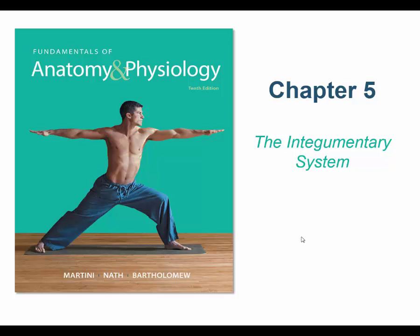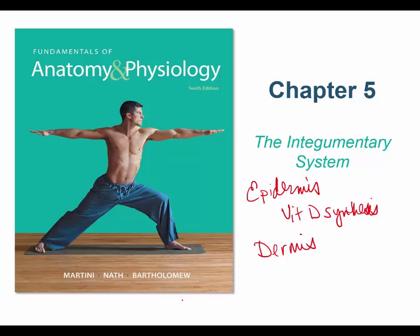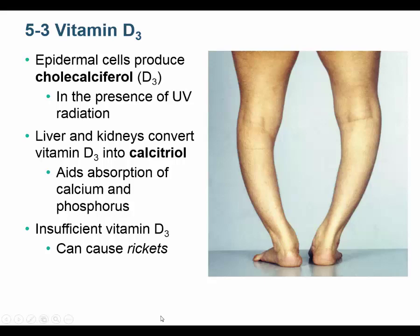Welcome back to chapter five, integumentary system, sections 5-3 through 5-5. We almost finished the epidermis — we talked about the layers, four layers in thin skin and five layers in thick skin. Something we didn't cover about the epidermis is vitamin D synthesis, or actually the beginning of vitamin D synthesis. We'll do that, then switch over to the dermis and talk about it as a connective tissue.